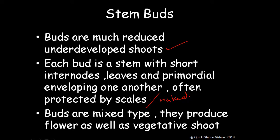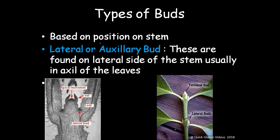Buds are of mixed type — they produce flowers as well as vegetative shoots. Types of buds based on their position on the stem: lateral or axillary buds are found on the lateral side of the stem, usually in the axil of the leaves. The terminal bud occurs at the apex of the stem, while axillary buds are found on the lateral side.